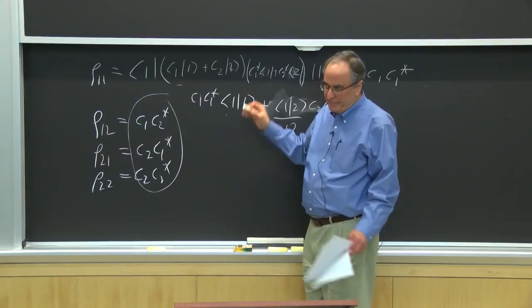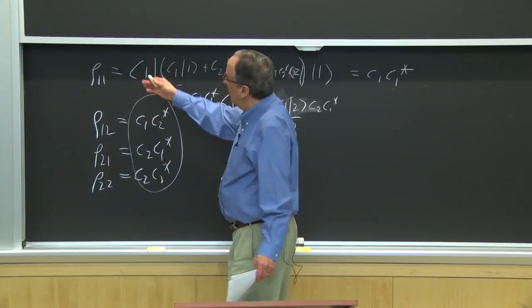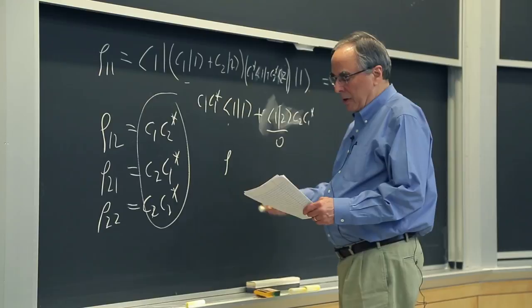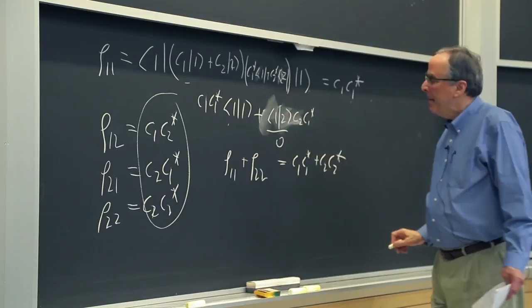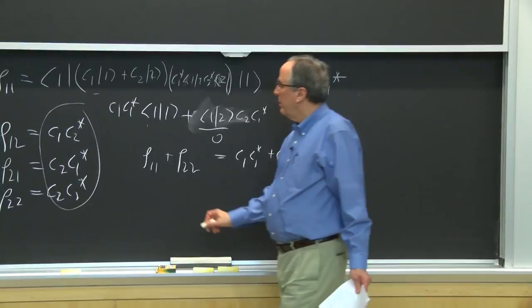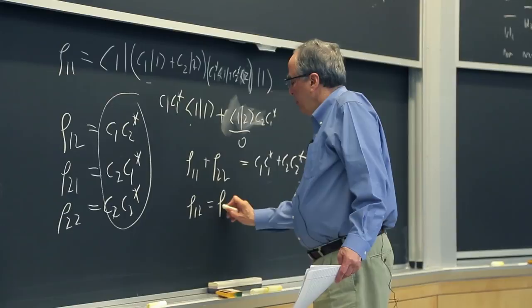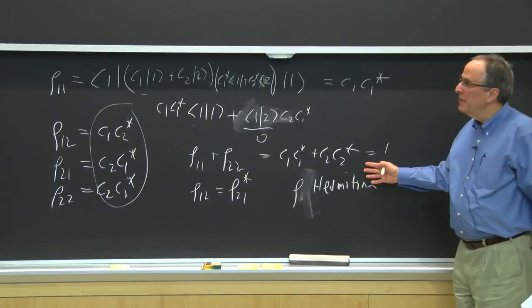We can see that rho_{1,1} + rho_{2,2} = C_1 C_1* + C_2 C_2*, and that's the normalization integral — that's 1. Also rho_{1,2} = rho_{2,1}*, so rho is Hermitian. The density matrix is normalized to 1 and it's a Hermitian matrix, so we can use all sorts of tricks for Hermitian matrices.